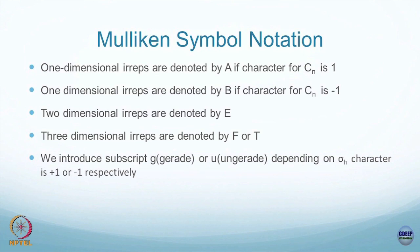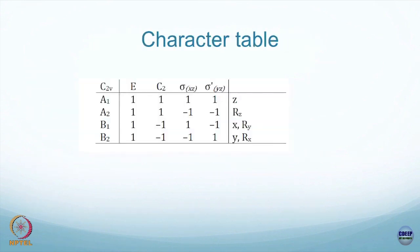We also have some finer details: we introduce a subscript G for gerade or U for ungerade depending upon whether the σh character is plus 1 or minus 1 respectively. To give you an example, for C2V we have E, C2, σ in the xz plane, and the other mirror plane which is also a vertical plane because it contains the z-axis.